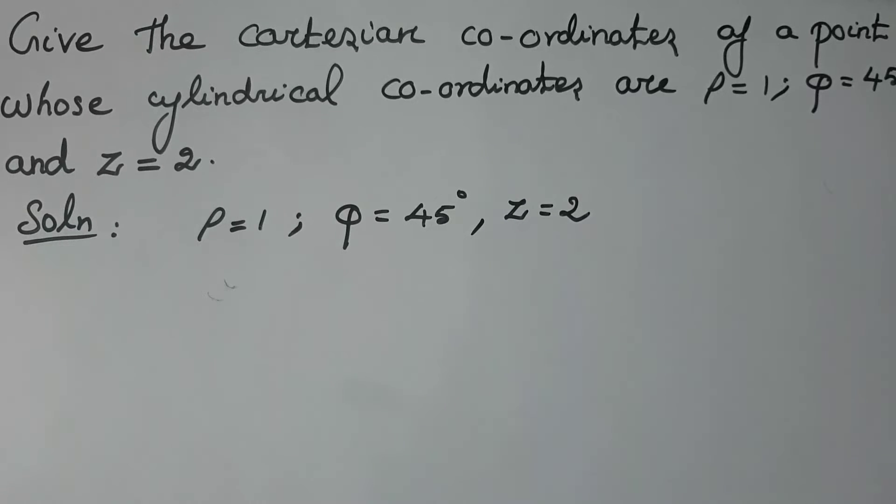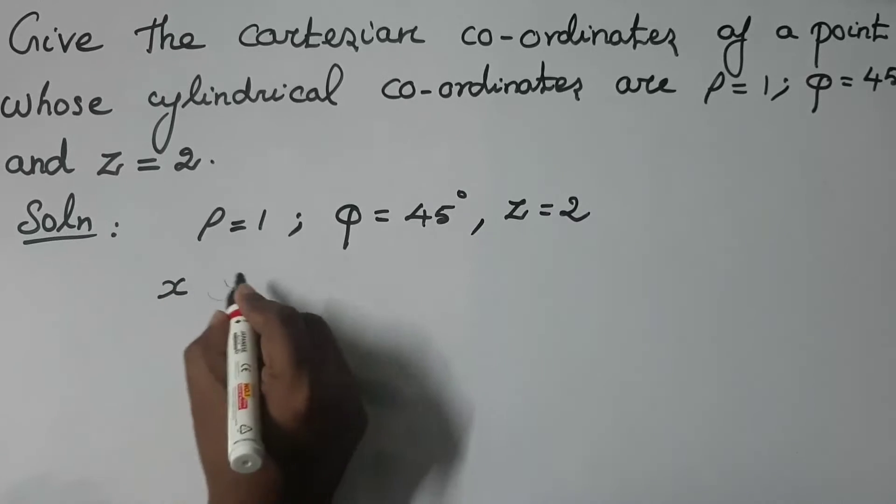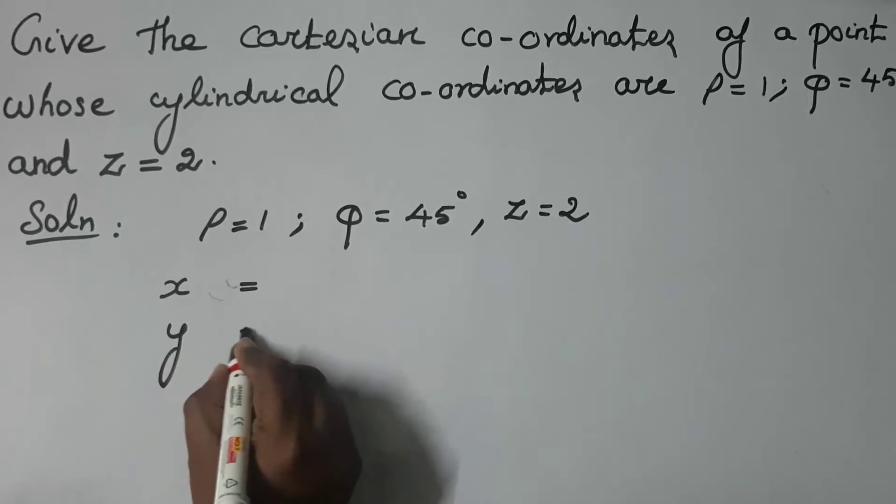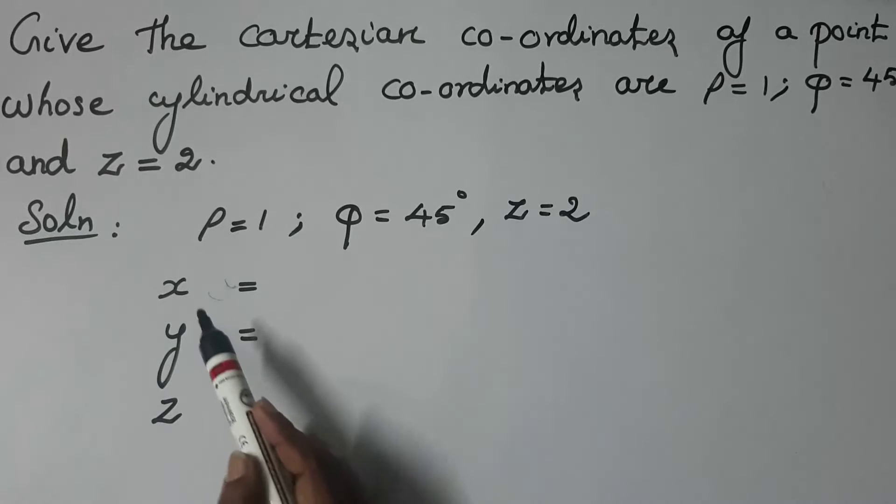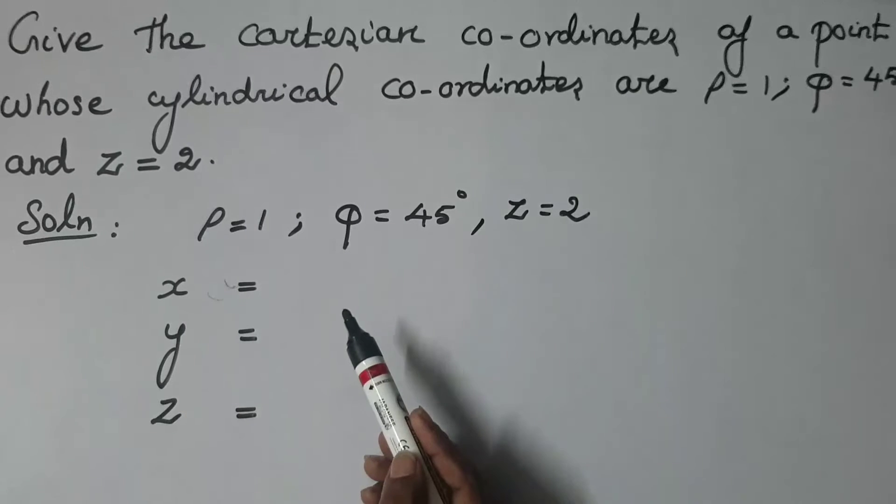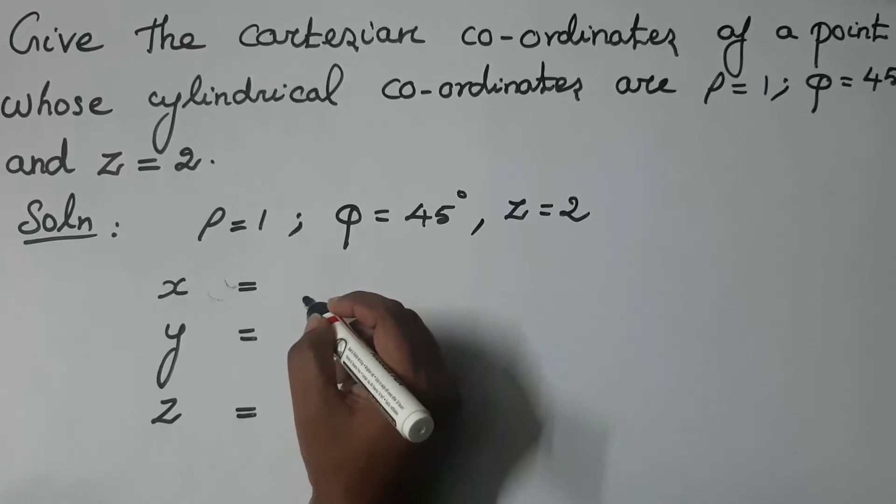So to find out Cartesian coordinate points, what are the Cartesian coordinate points? X, Y, and Z. So first write these points: X, Y, and Z. Then write the relation between Cartesian coordinate points and cylindrical coordinate points. So first write this relation.